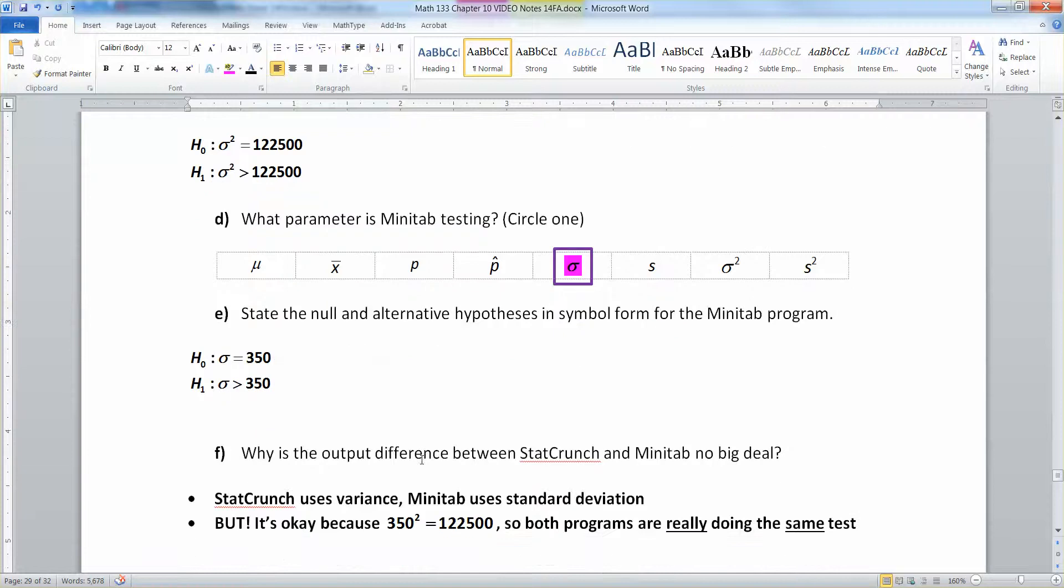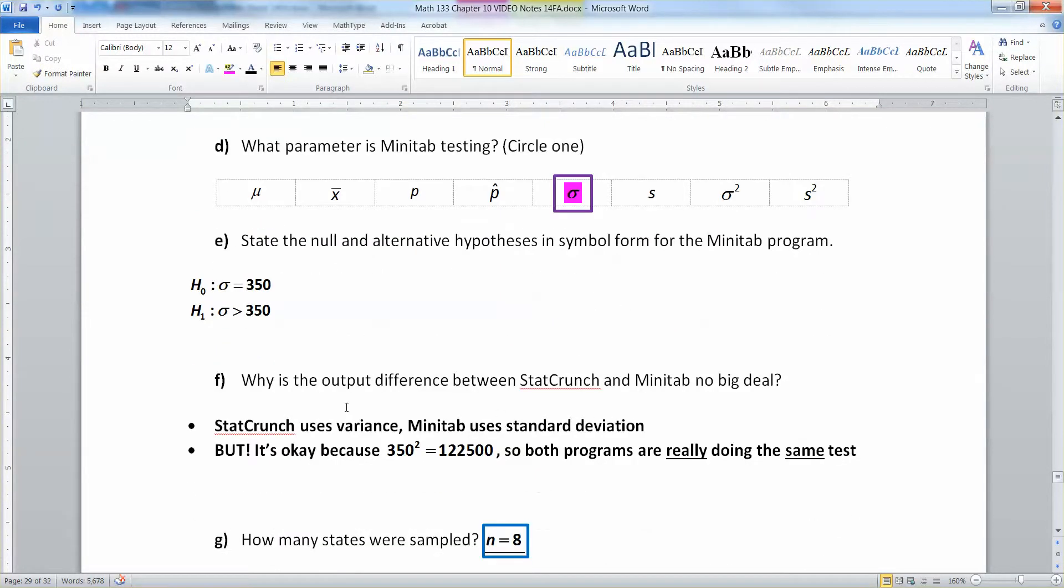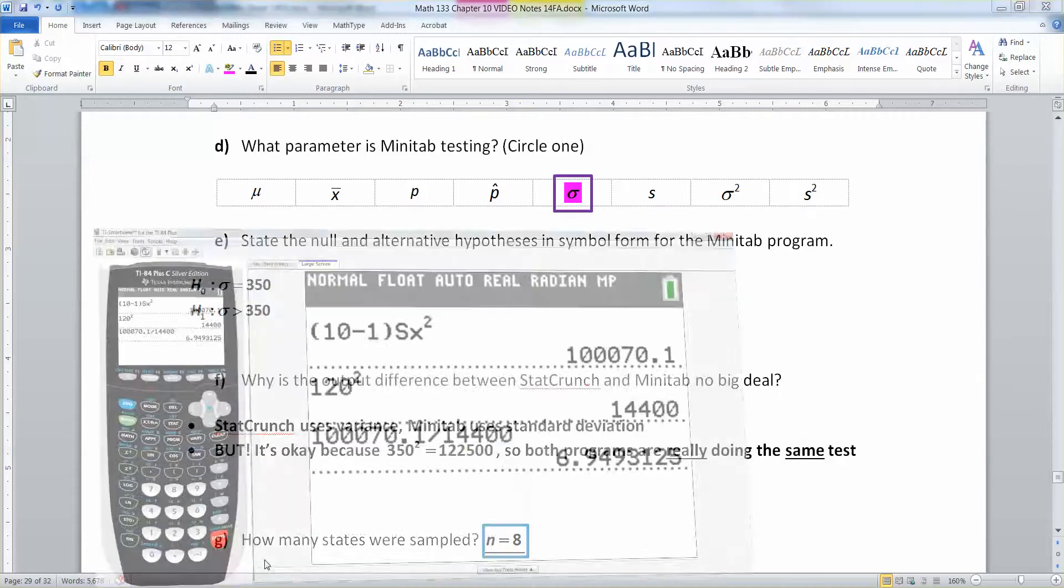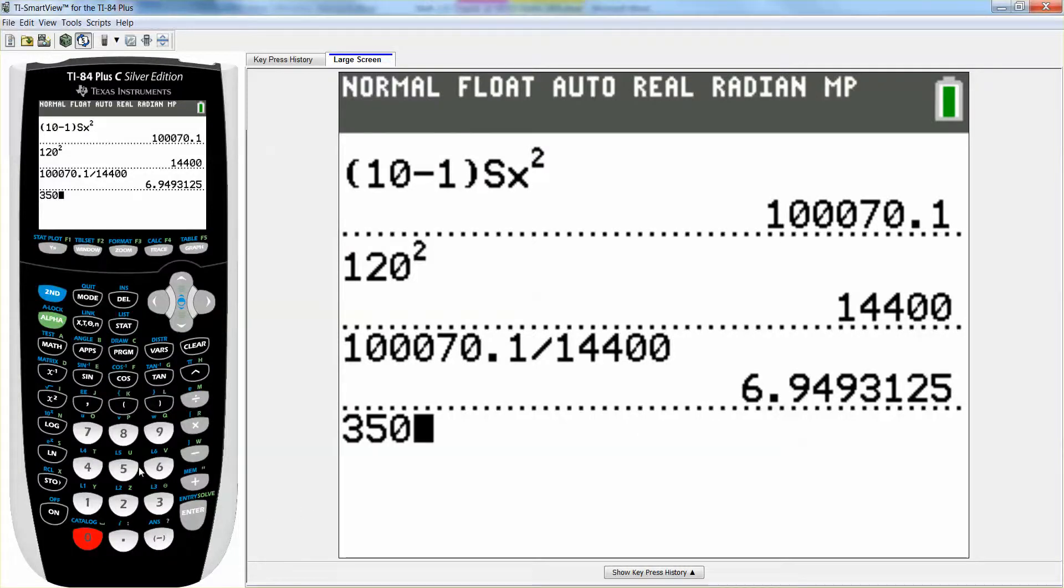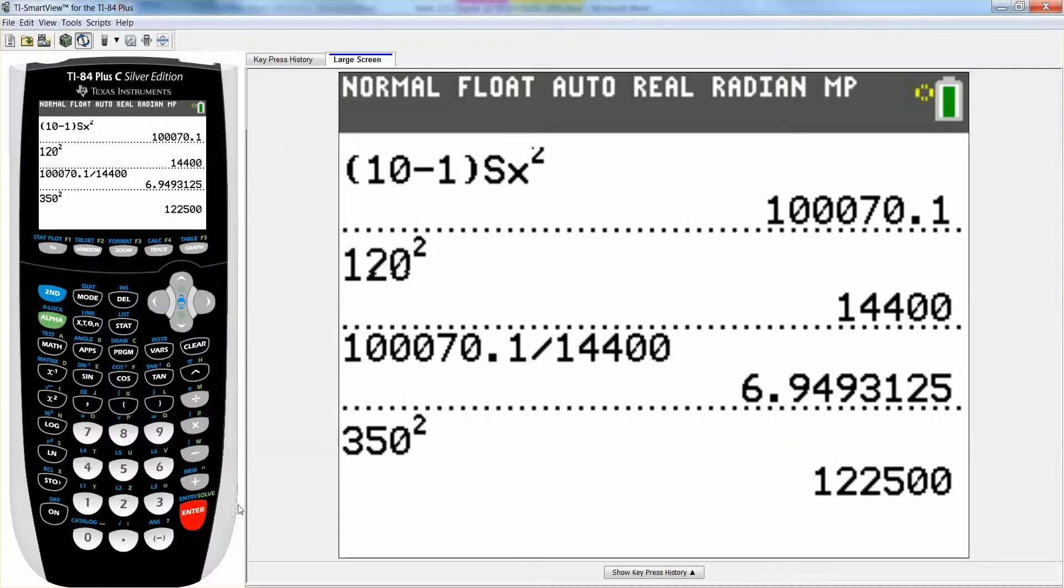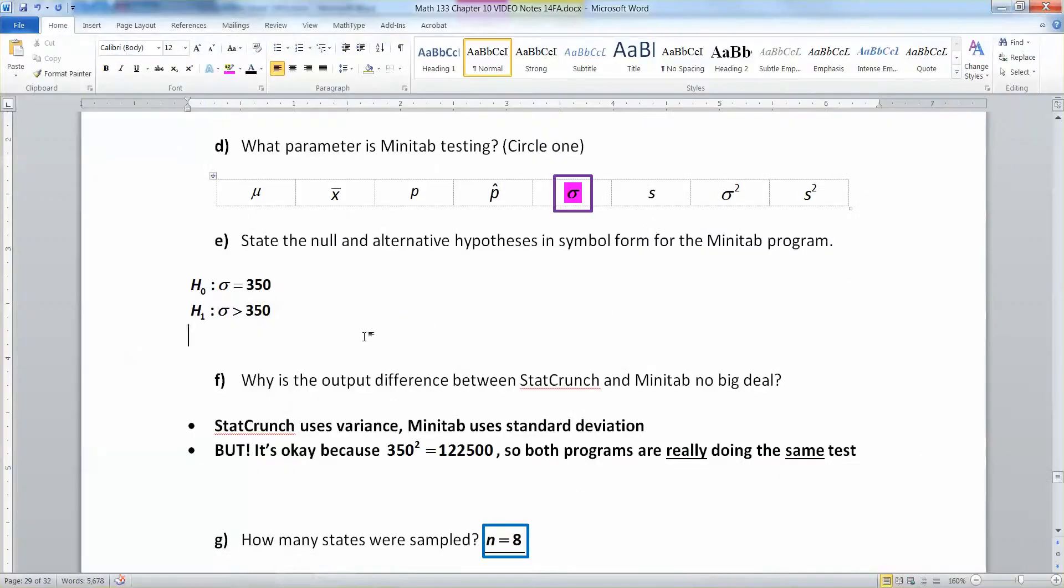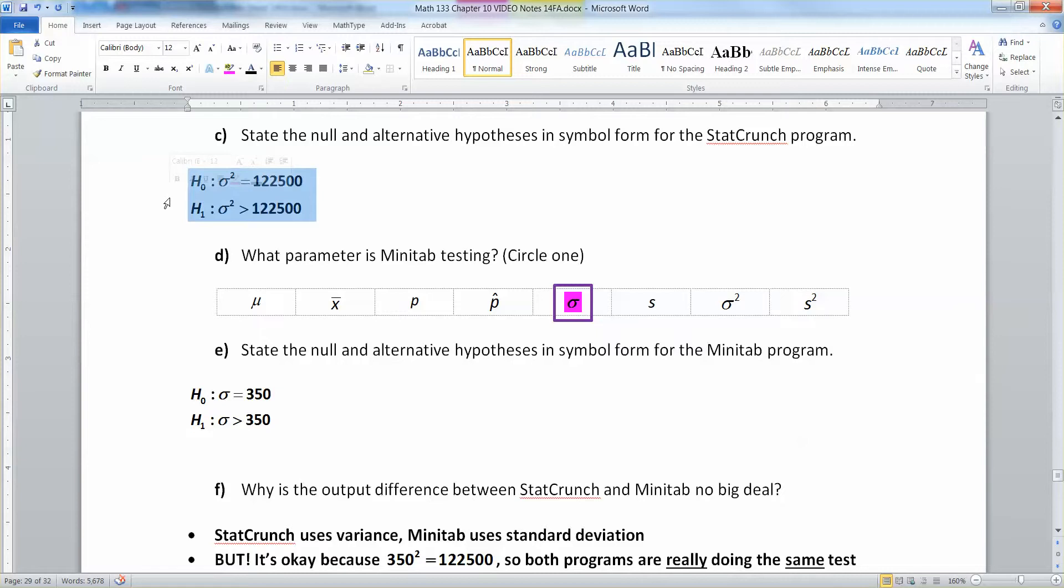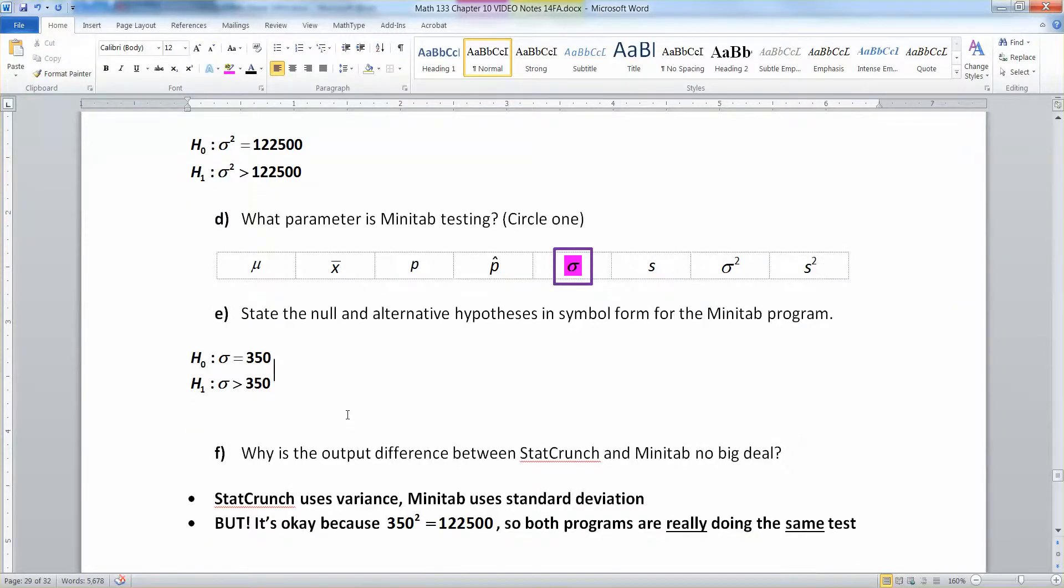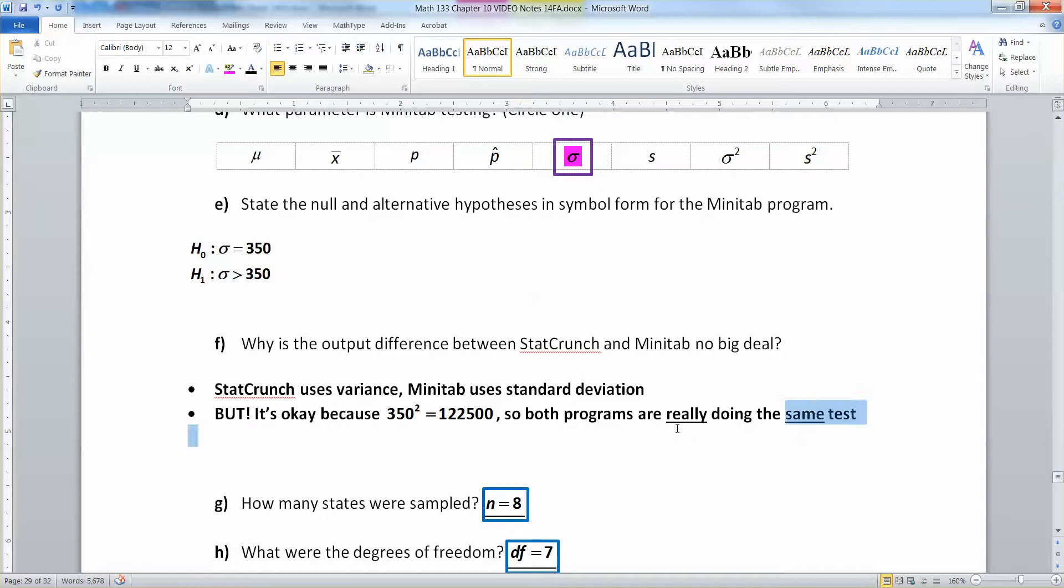Now, why is that difference no big deal? Well, StatCrunch is using the variance. Minitab uses the standard deviation. But it's okay because 350, when you square it, gives you 122,500. And that's where they came up with the two different numbers. So StatCrunch is using the squared value. Minitab is using the singular sigma value. But they're really doing the same test.